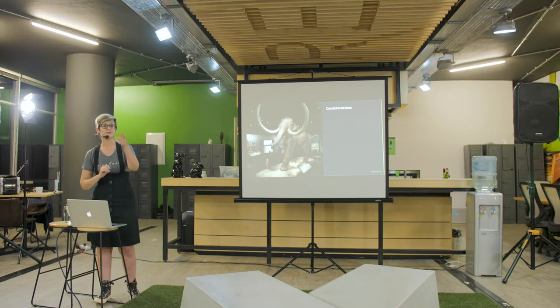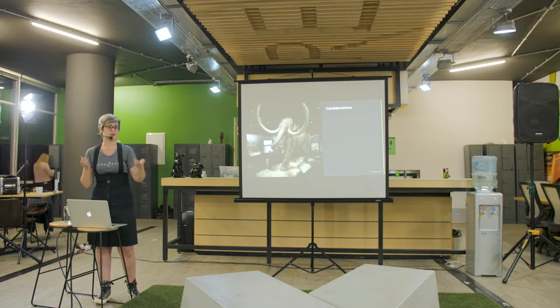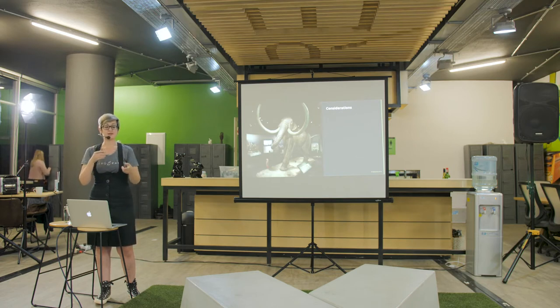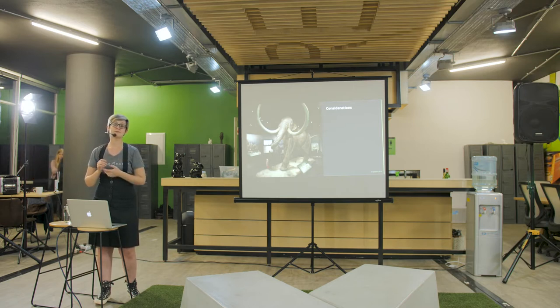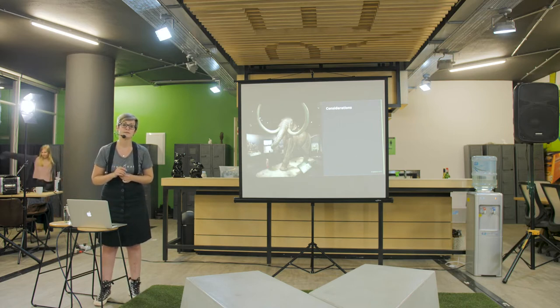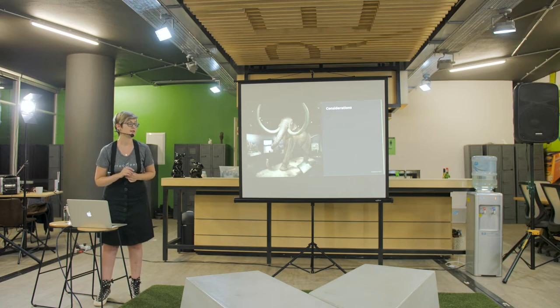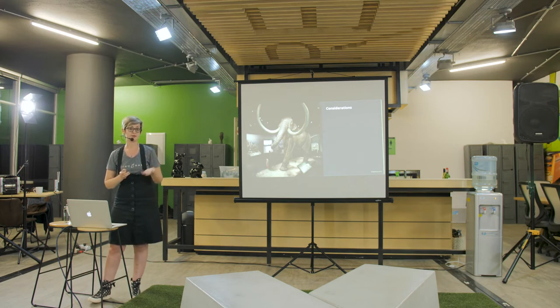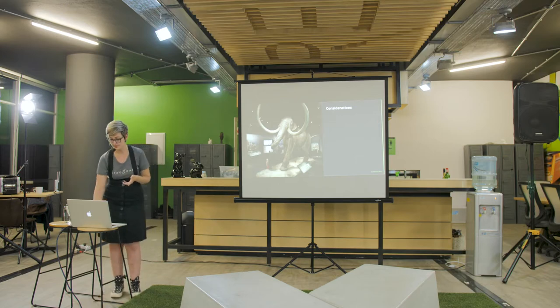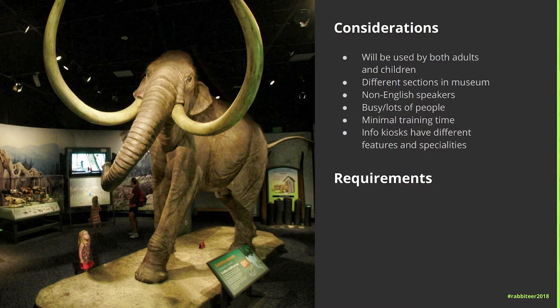What kind of target market is at a natural history museum? Pretty much anyone — foreigners, non-English speakers, adults bringing their children. It's a wide variety of people, so you need to cater for everyone, which makes it a lot more complicated. Device hardware is a good point too — you need to know what the devices are actually capable of. It will be used by both adults and children, there are different sections in the museum, there are non-English speakers, museums tend to be very busy with lots of people, there's minimal training time, and the three different info kiosks have very different features and specialities.